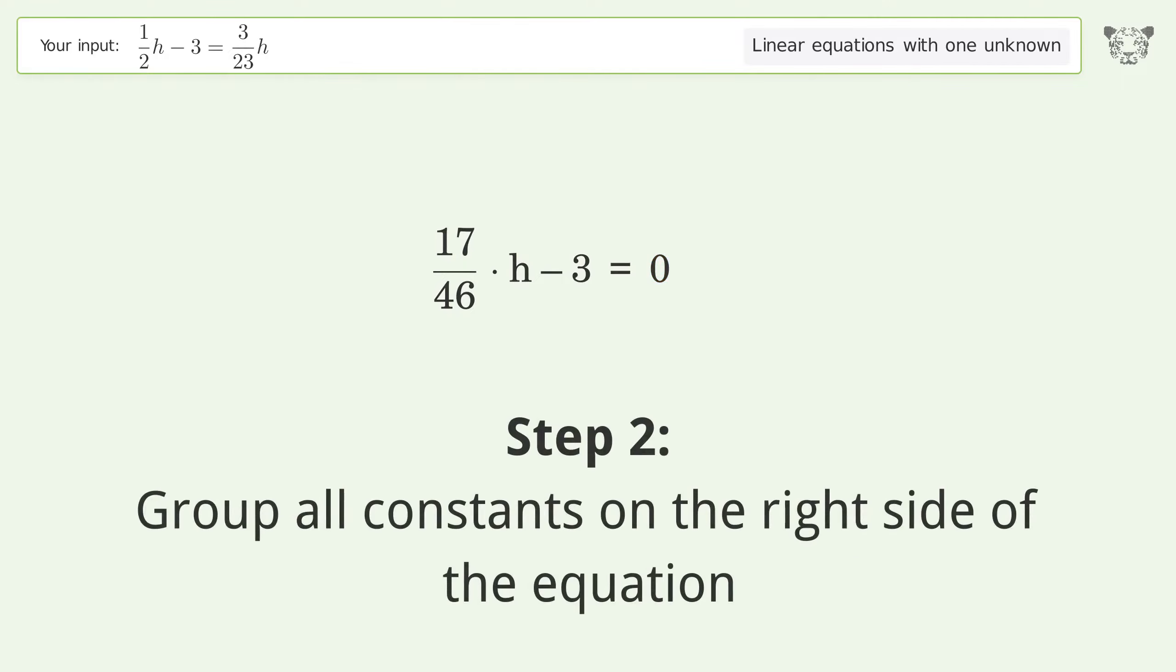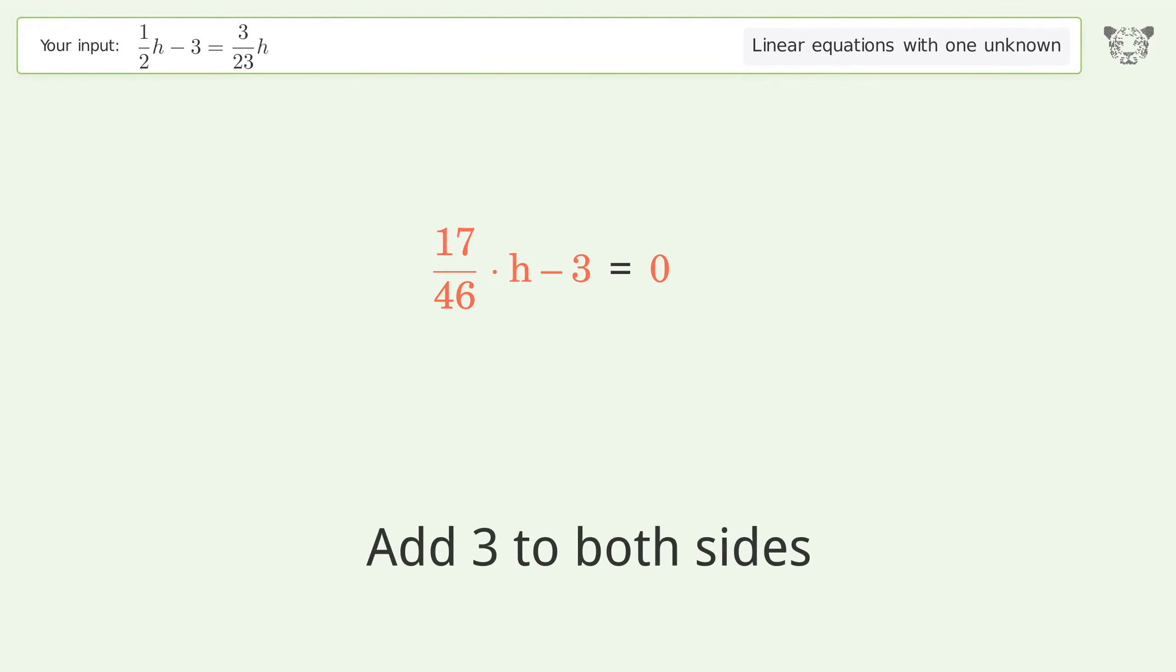Group all constants on the right side of the equation. Add 3 to both sides. Simplify the arithmetic.